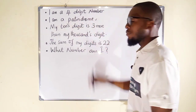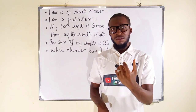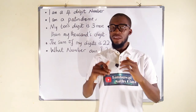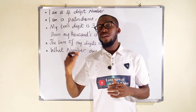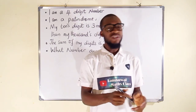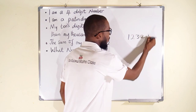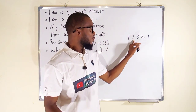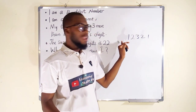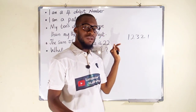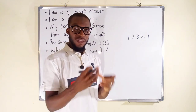First of all, let us find out what a palindrome is. A word, phrase, number, or sequence is said to be a palindrome if and only if the way it reads forward is exactly the way it reads backward. For example, consider the number 12321 — backward it's also 12321. The way it reads forward is exactly the way it reads backward. But this question says I am a four-digit number, so let's consider a four-digit number.